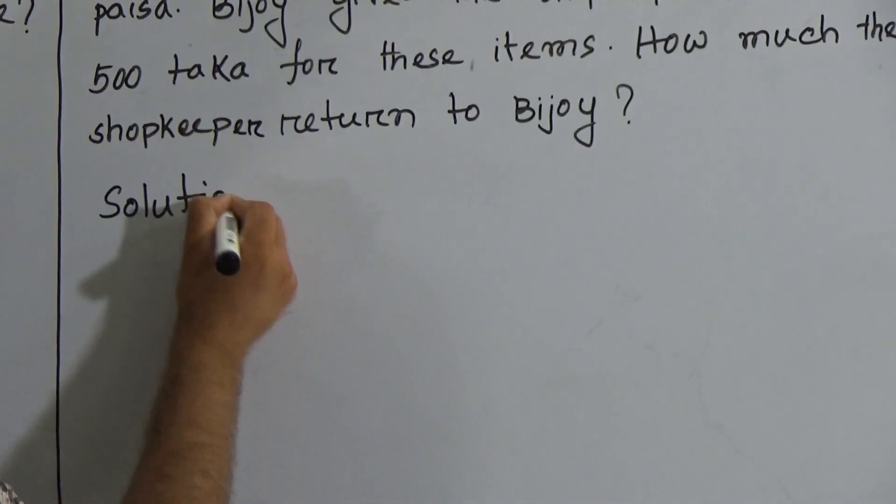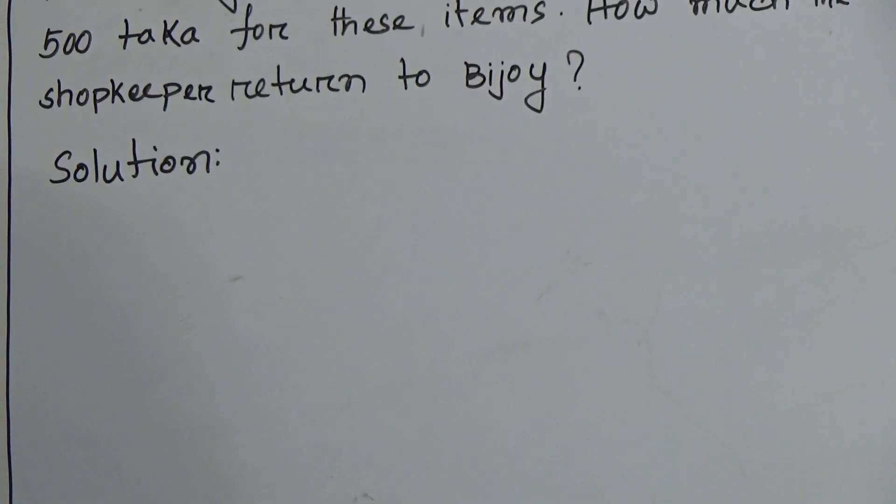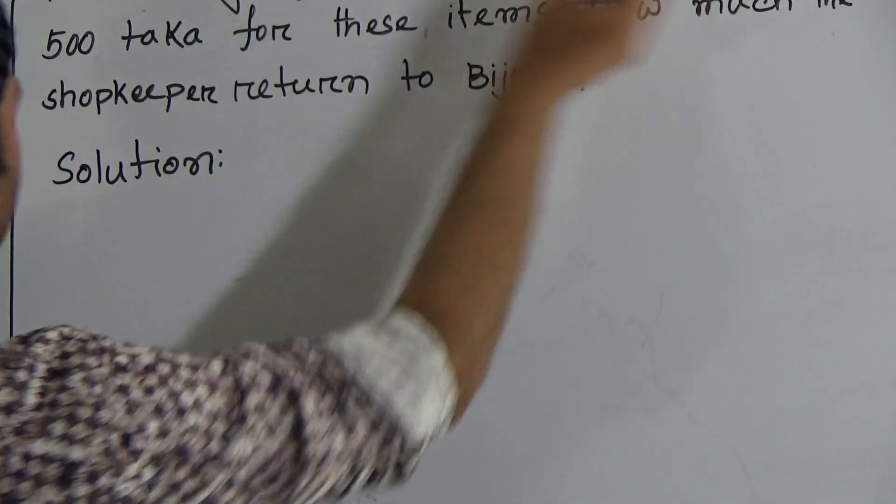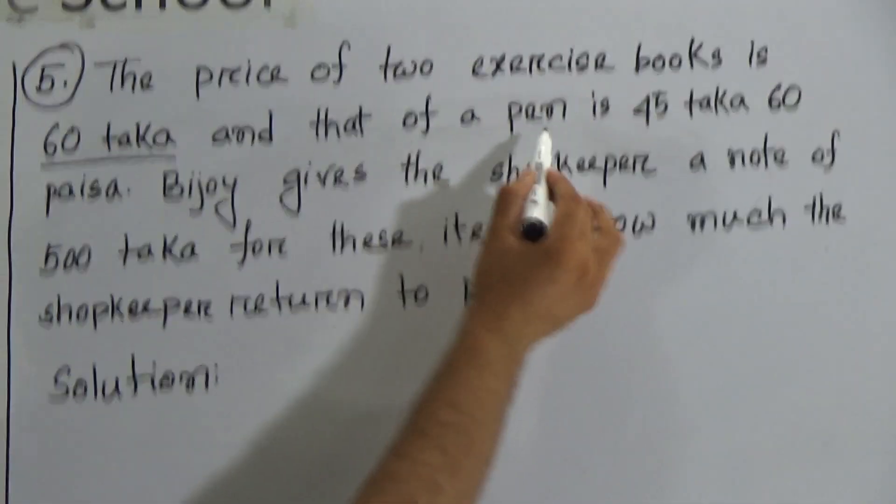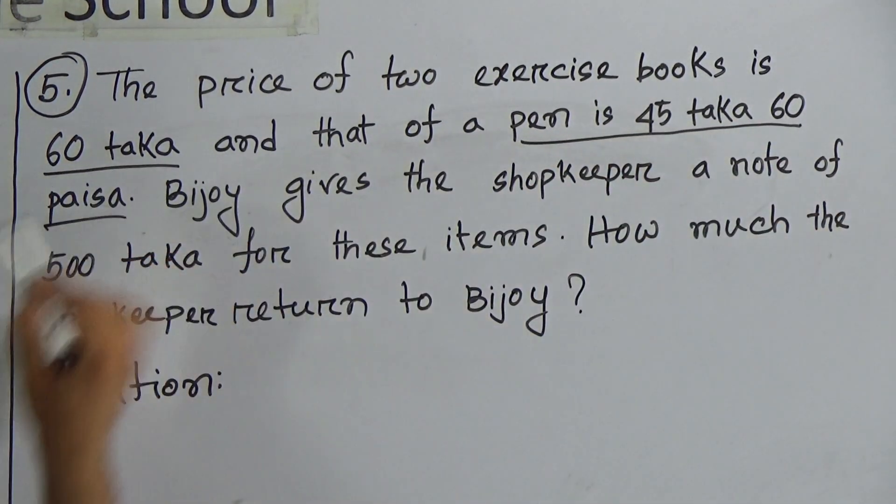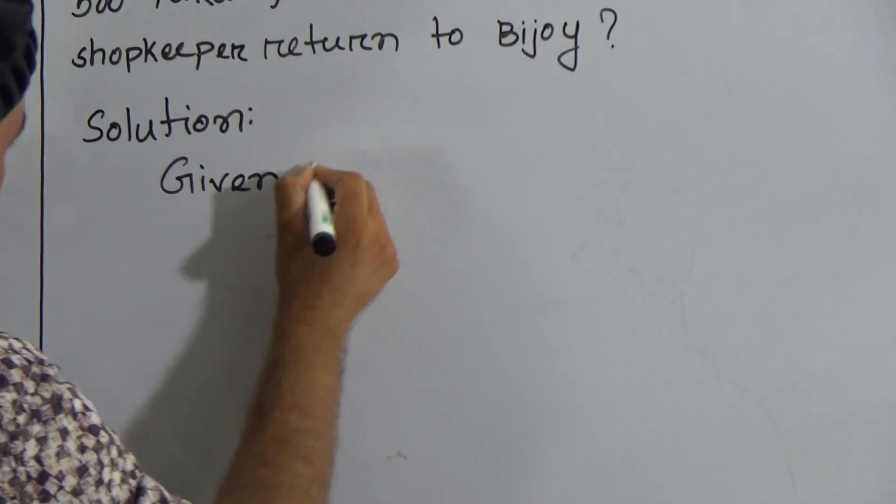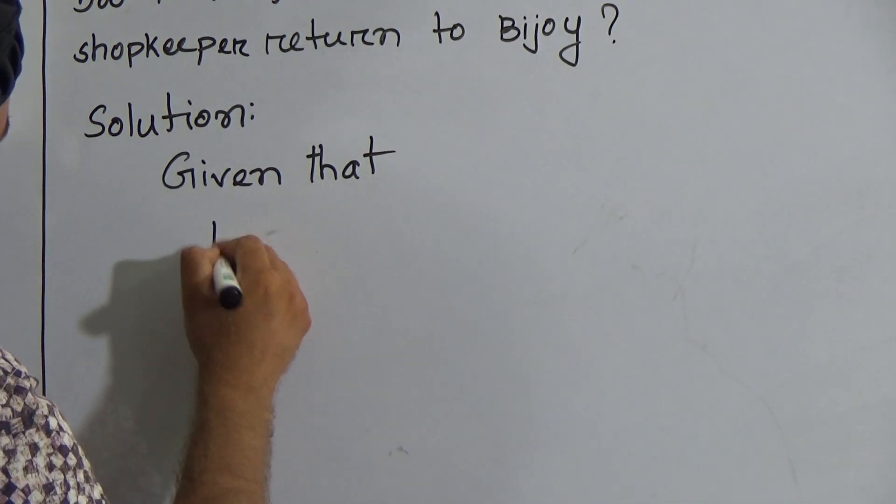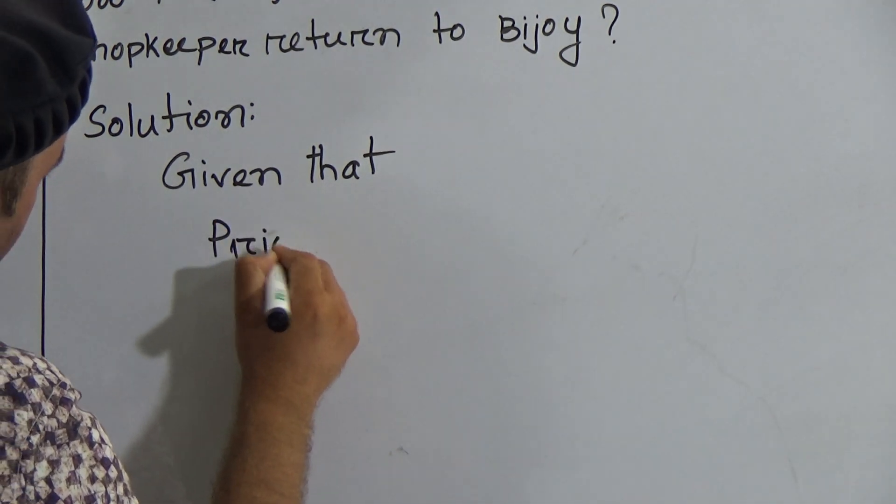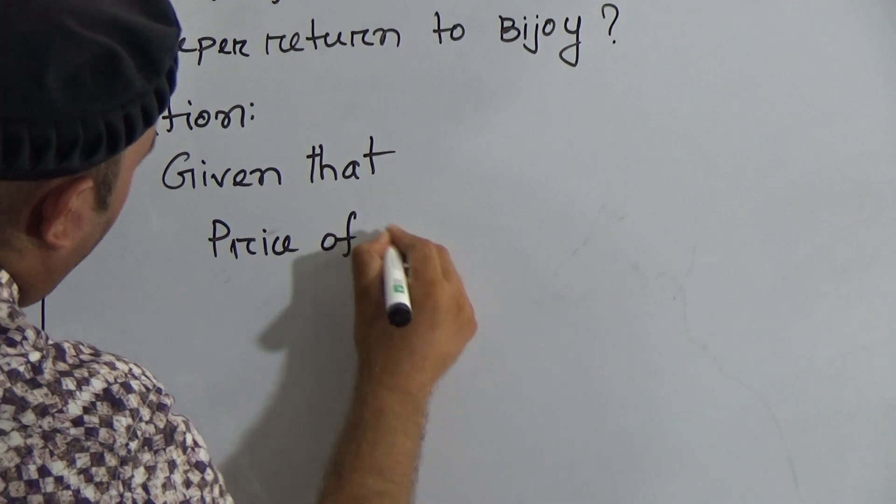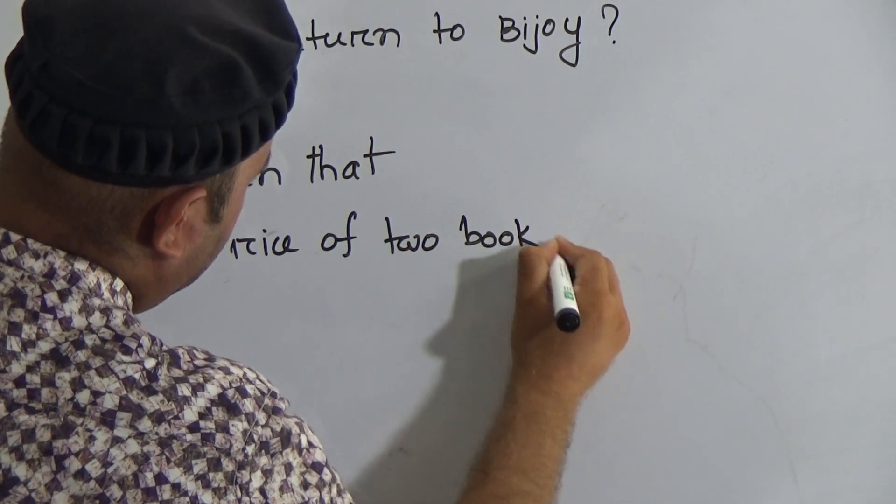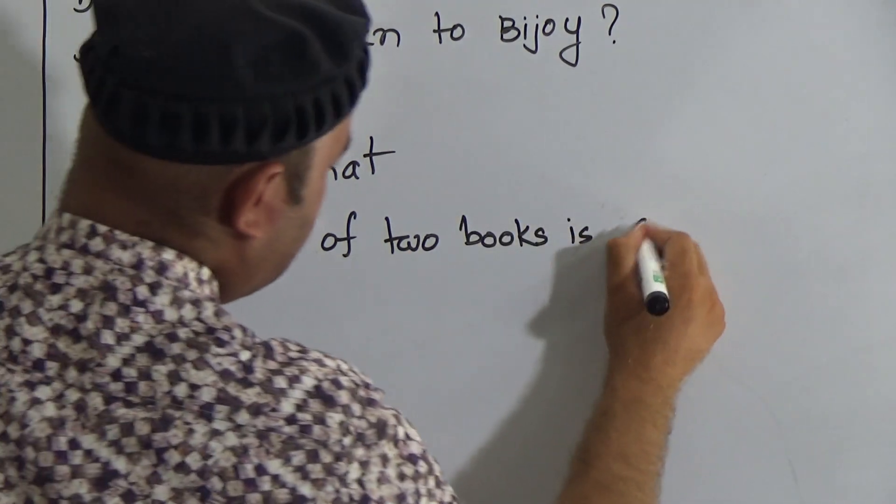Now here is the solution. First of all, look here there are two parts. The price of two exercise books is 60 taka and pen is 45 taka 60 poises. Given that: price of two books